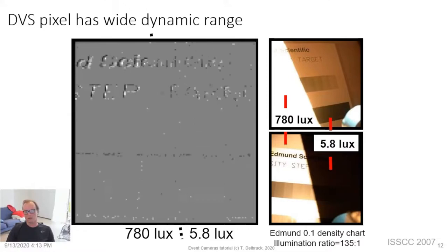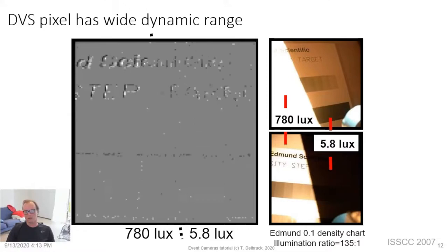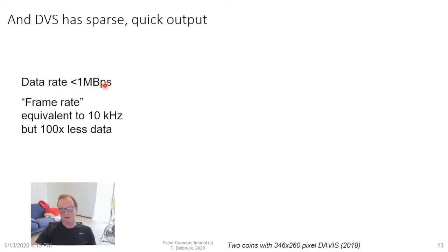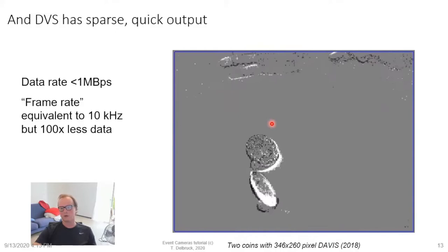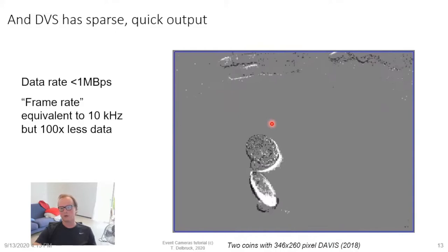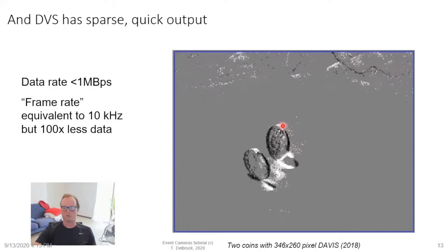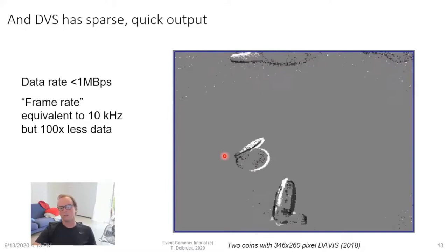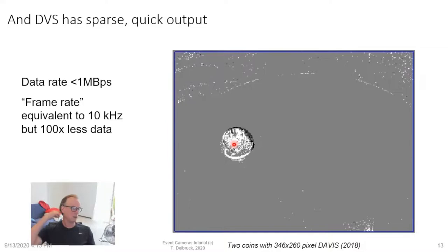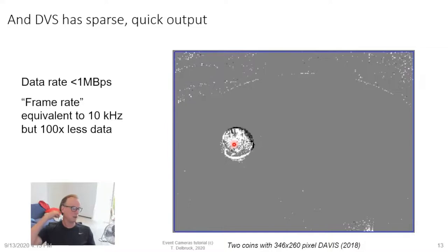Another nice characteristic is the DVS's sparse and quick output. In a video of two spinning coins recorded with a 346×260 pixel DAVIS DVS camera, the data rate is always less than a megabyte per second, but it has an equivalent frame rate of a 10 kHz camera with 100 times less data. Because of the event output, you can slow down the scene by a factor of 30–40 to catch collisions of the two coins. If you're a computer vision person, you only need to process pixels producing brightness change events, and you get these events within a millisecond of the real-world occurrence.